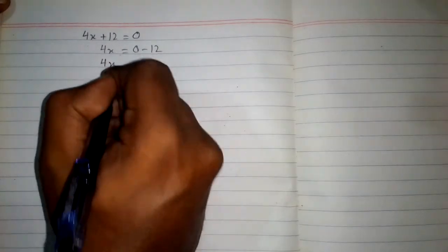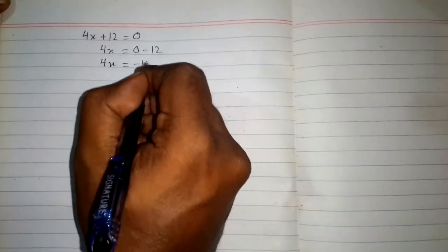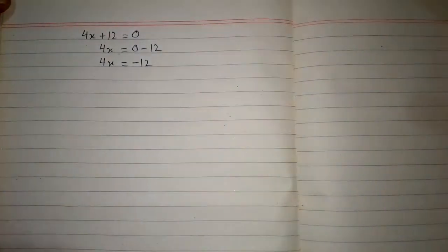And then we have 4x is equal to minus 12 because 0 minus 12 is minus 12.